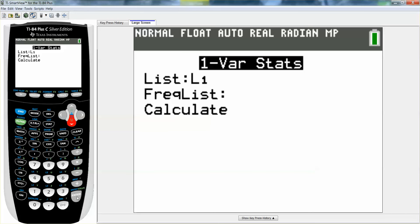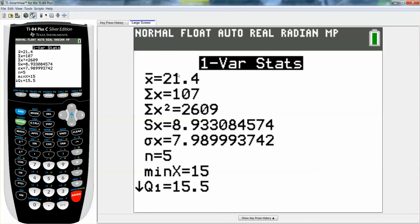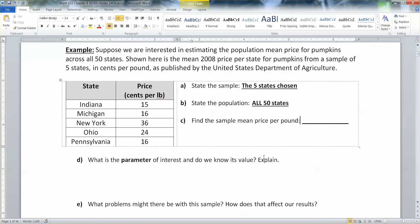No frequency list this time. This is not a weighted mean. And it's right there, 21.4. So it's 21.4 cents per pound.